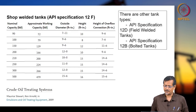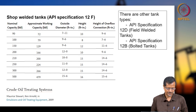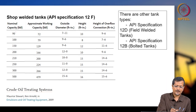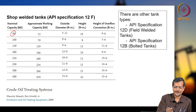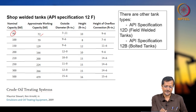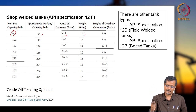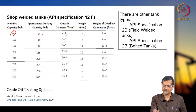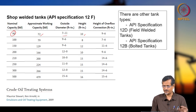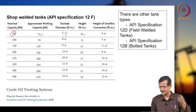There are several types of gun barrels: shop welded, field welded, and those following API specifications. One specification from the book 'Crude Oil Treating Systems' by Maurice Stewart and Carnault shows a capacity of 90 barrels, working capacity 72 barrels, outside diameter 7 feet 11 inches, height 10 feet. Field welded gun barrels will be much bigger than shop-welded ones.